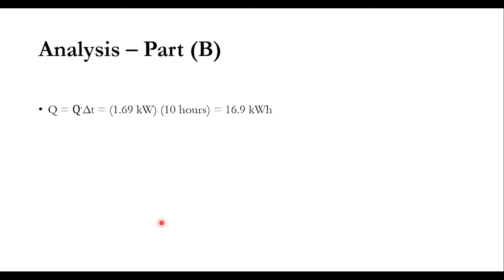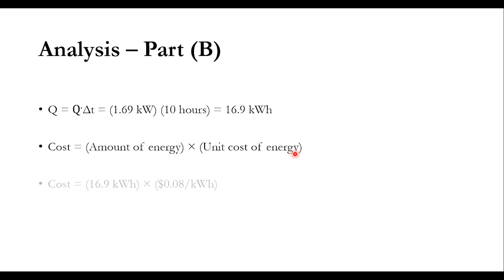For part (b): multiply 1.69 kW by 10 hours to get 16.9 kWh. Using the cost formula — amount of energy × unit cost of energy: 16.9 kWh × $0.08/kWh = $1.35. This means a loss of $1.35 due to the non-existence of insulation, representing the heat loss and associated cost for the system.